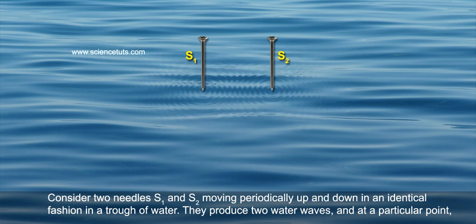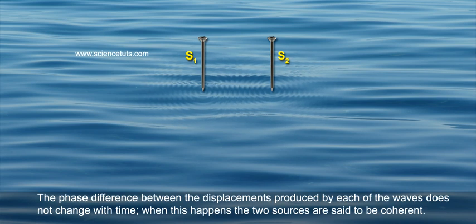They produce two water waves and at a particular point the phase difference between the displacements produced by each of the waves does not change with time. When this happens, the two sources are said to be coherent.